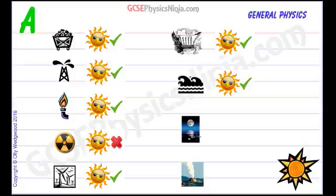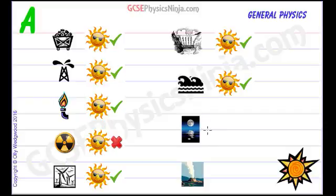What about tidal power? The tides rise and fall twice a day, and we can sometimes use that to drive turbines. Where does that come from? Well, that comes from the rotation of the moon and the moon's gravitational pull on the water of the Earth. As the moon rotates around the Earth, it makes the Earth's water bulge a little bit — and that's tides, which happen twice a day. So, tidal power is not dependent on the sun; it's dependent on the moon.